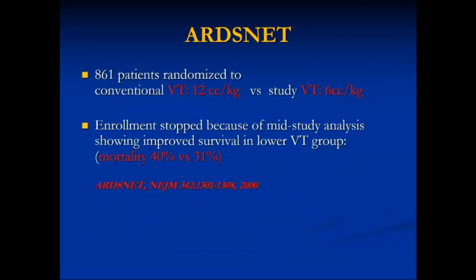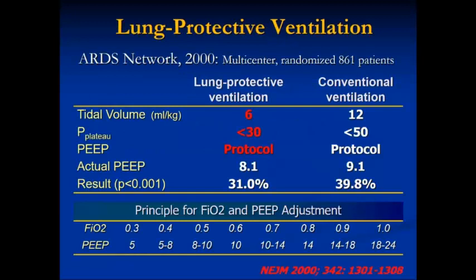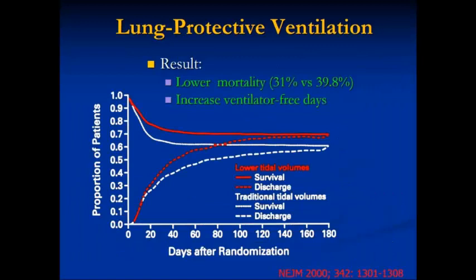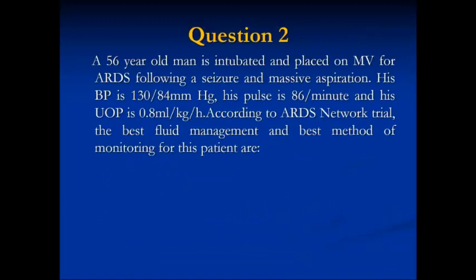This is the 2000 ARDSNet trial. You have the conventional 12 mL group and the low-volume 6 mL group. Mortality and morbidity were all better in the low tidal volume group, and that's what we've been using. Mortality dropped from 40% to 30%, and this is basically what we now use as standard care.